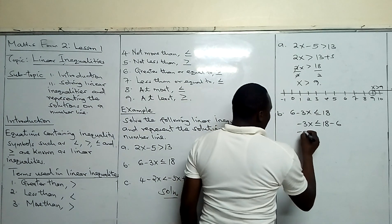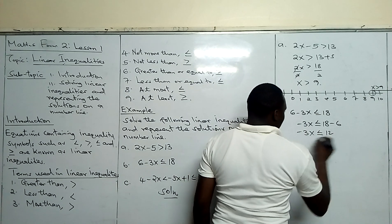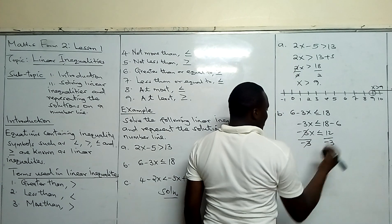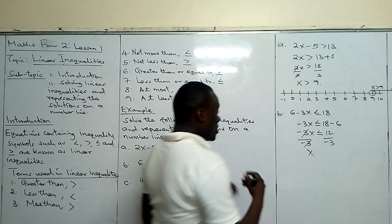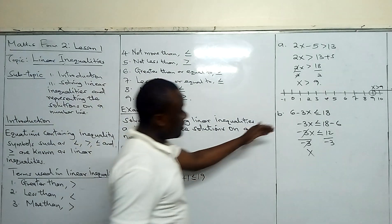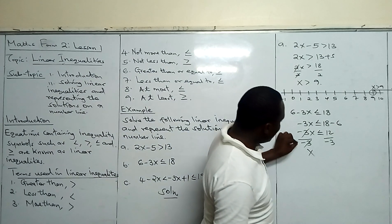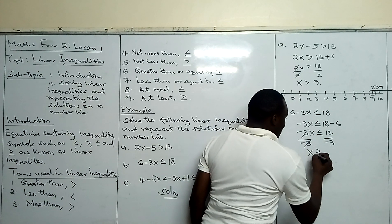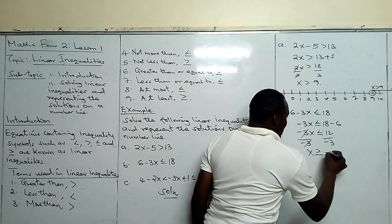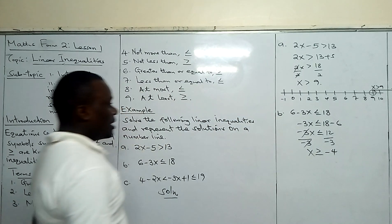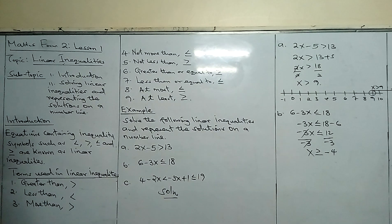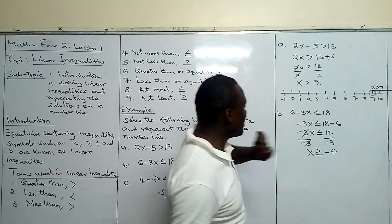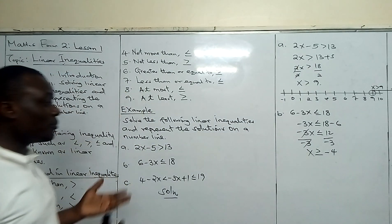We obtain minus 3x less than or equal to 12, divided by minus 3 on both sides. When you divide by a negative number in a linear inequality, the symbol will change. So it becomes x greater than or equal to minus 4.